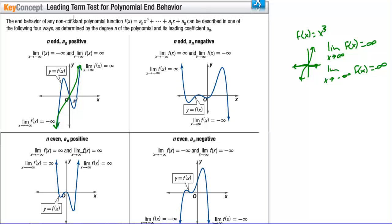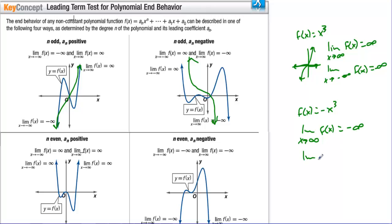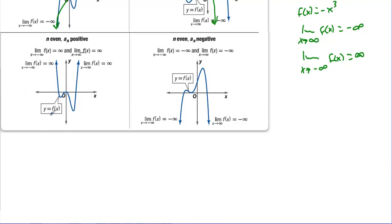We're only talking about ending behavior, not the middle — the function can twist and turn there. For f(x) = −x³, the limit as x → ∞ is negative infinity, and as x → −∞ is positive infinity. Now if we have f(x) = x⁴ with an even degree and positive coefficient, the limit as x → ±∞ is positive infinity on both sides — it goes up on both ends.